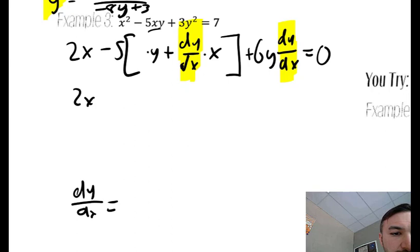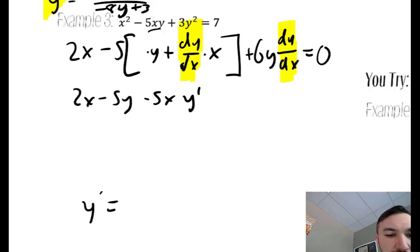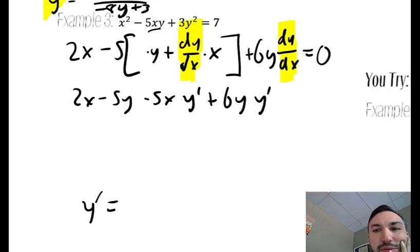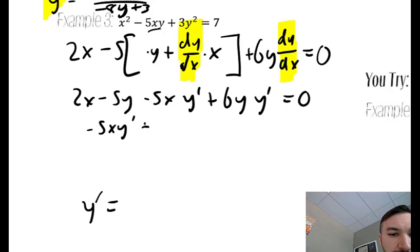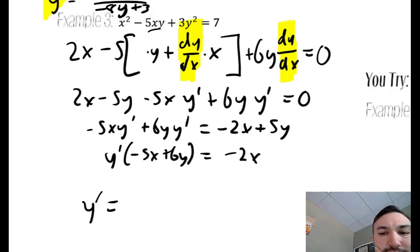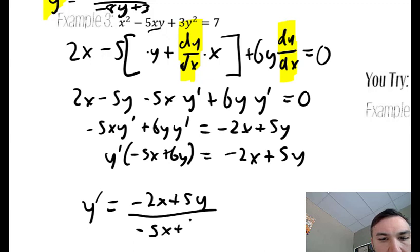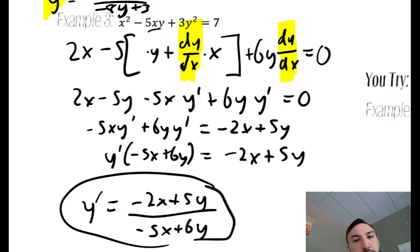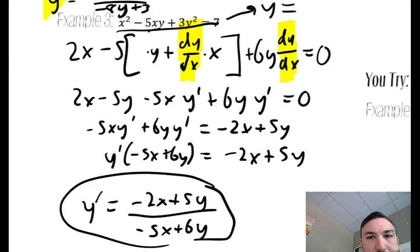The rest we solve with algebra. We distribute the 5 and write this as y prime — they're interchangeable; it just looks a little nicer. Anything that is not a y prime, I'll subtract over to the other side: subtract 2x over and subtract negative 5y. Both of these have a y prime, so we can factor it out. What I'm solving for is being multiplied by all that, so let's divide both sides by all that. If it's a multiple choice question and your answer doesn't match, you may need to go back and solve for y and plug it in.